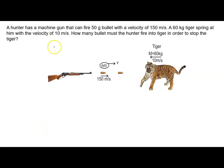In this problem, a hunter has a machine gun that can fire 50 gram bullets. The mass of the bullet is 50 grams, which we can write as 50 divided by 1000 equals 0.05, or 1/20 kilogram, with a velocity of 150 meters per second.